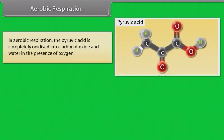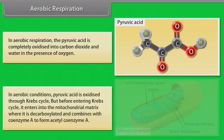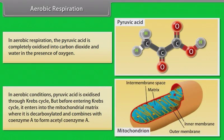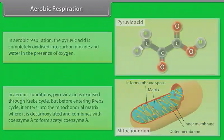In aerobic respiration, the pyruvic acid is completely oxidized into carbon dioxide and water in the presence of oxygen. In aerobic conditions, pyruvic acid is oxidized through the Krebs cycle, but before entering the Krebs cycle, it enters the mitochondrial matrix where it is decarboxylated and combines with coenzyme A to form acetyl coenzyme A.